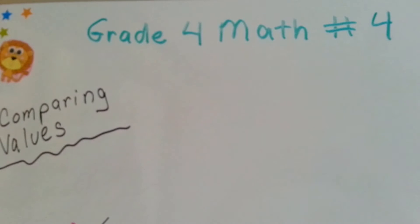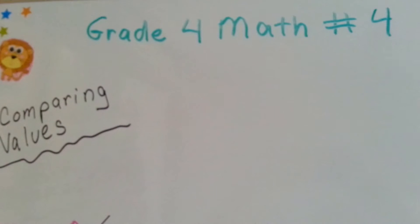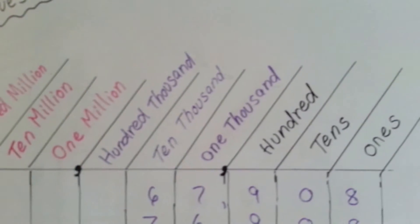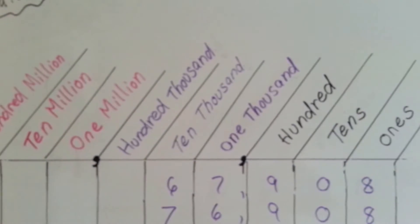Grade 4 Math, number 4, Comparing Values. In our last video, we looked at place values going all the way up to 100 million.